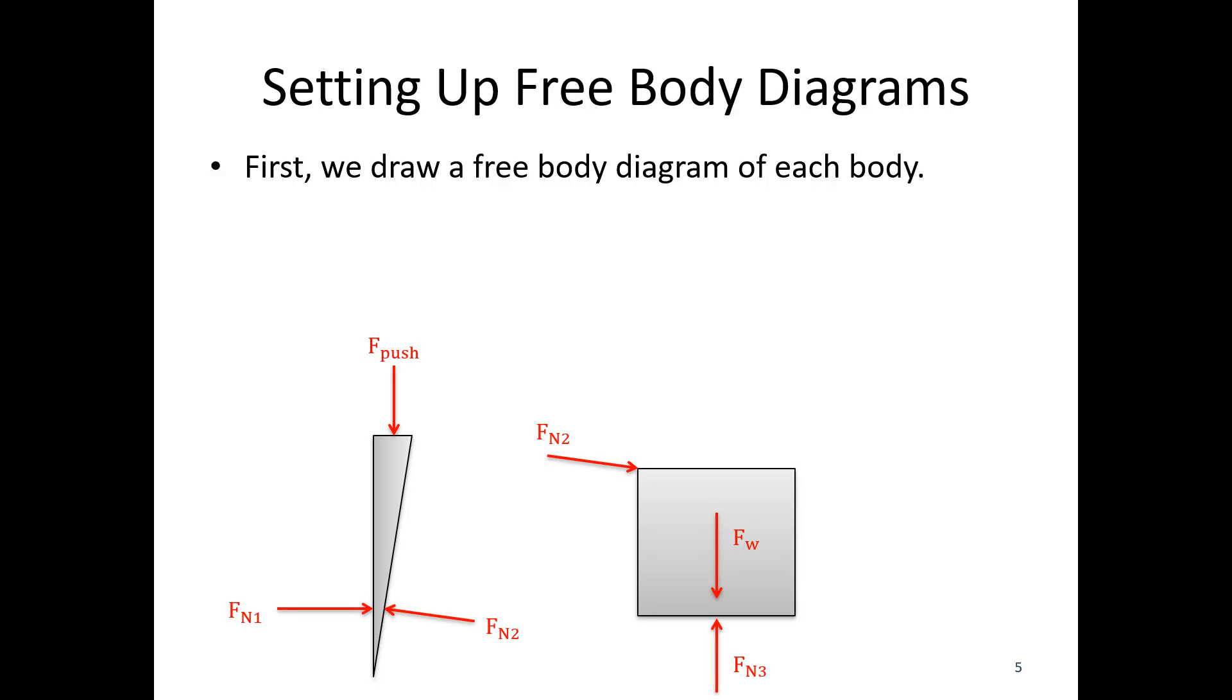We're also going to have normal forces wherever we have contact. Fn1 is between the wedge and the wall. Fn2 is between the wedge and the safe, and you'll notice that this is a Newton's Third Law pair, which means we've got a set of equal and opposite forces. Then Fn3 is between the safe and the floor.